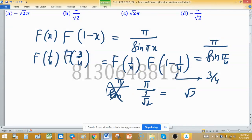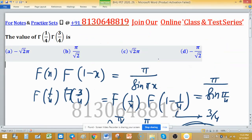This value equals root 2π. Which option gives root 2π? Option c gives root 2π, so c is the correct answer.